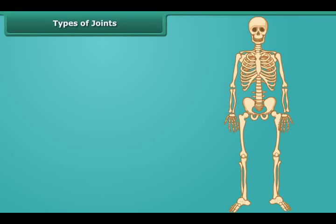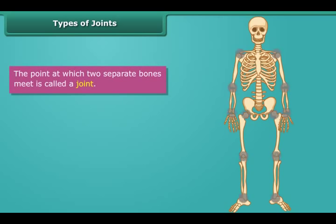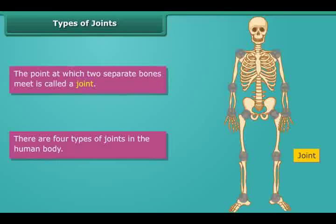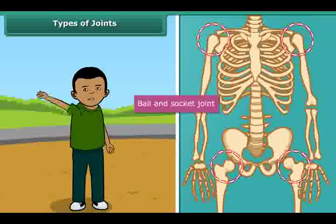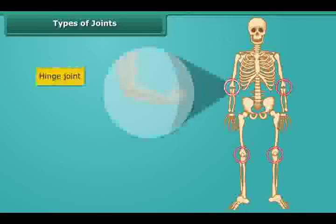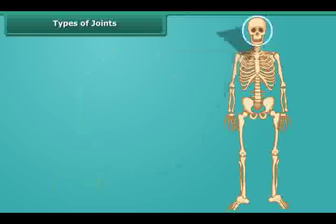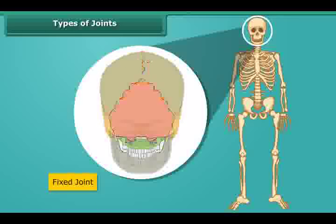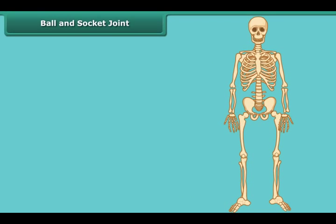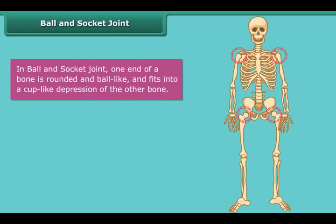Now it's time to know about joints. The point at which two separate bones meet is called a joint. There are four types of joints in the human body: ball and socket joint, hinge joint, pivotal joint, and fixed joint. In a ball and socket joint, one end of a bone is rounded and ball-like, and fits into a cup-like depression of the other bone. It provides movement in any direction.